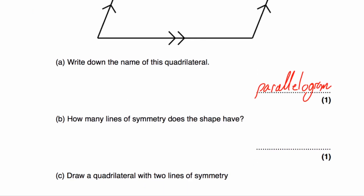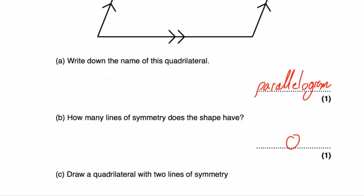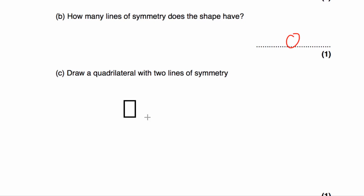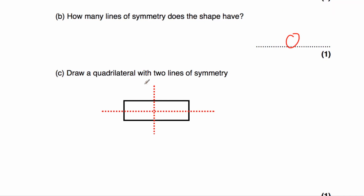Part B asks how many lines of symmetry the parallelogram has. A parallelogram doesn't have any lines of symmetry — if you tried a vertical or horizontal line of symmetry, the corners wouldn't match up, so zero. Part C asks us to draw a quadrilateral with two lines of symmetry. A rectangle has a vertical line of symmetry and a horizontal line of symmetry.